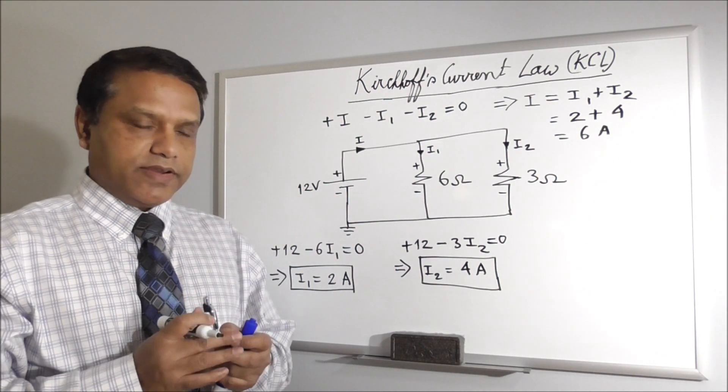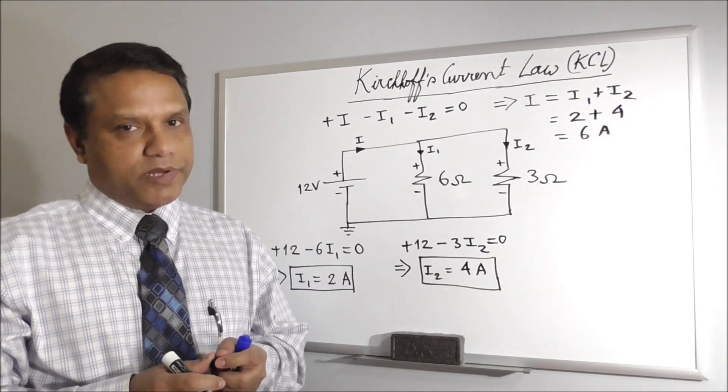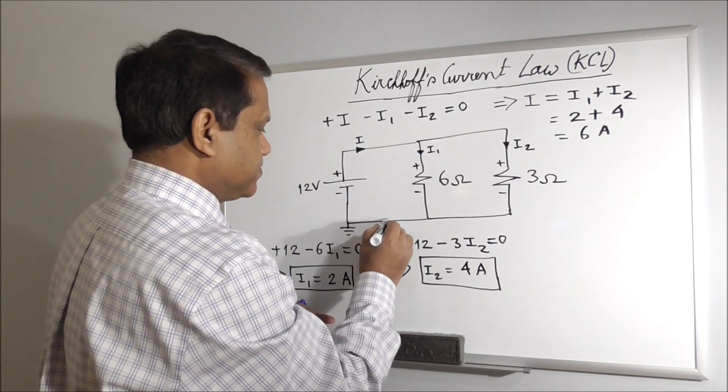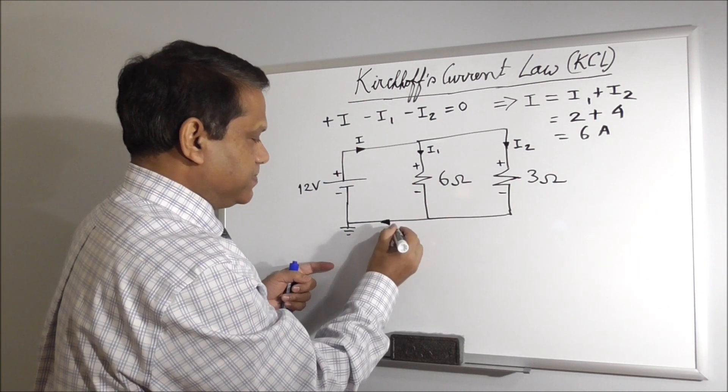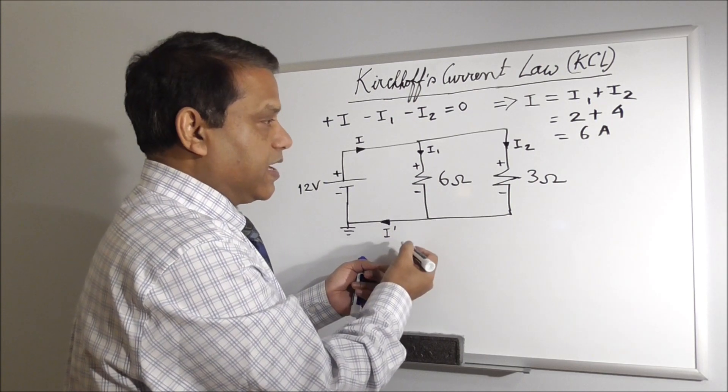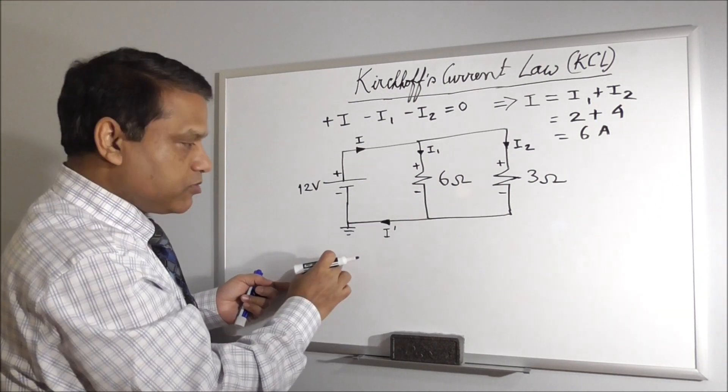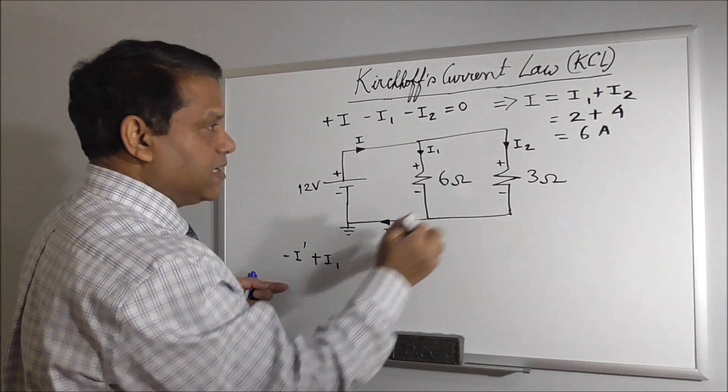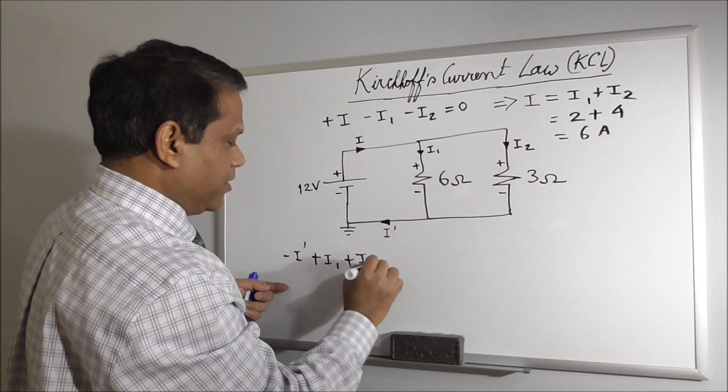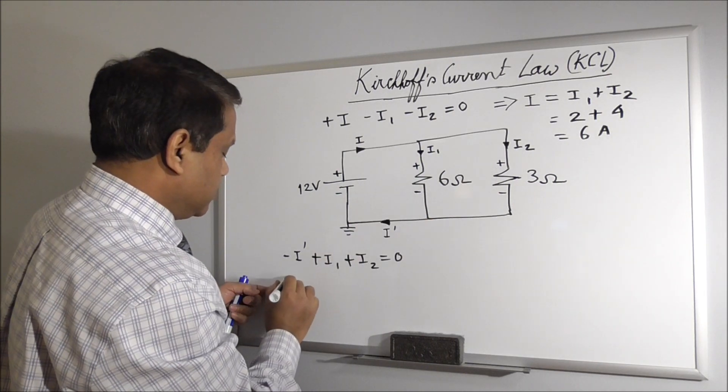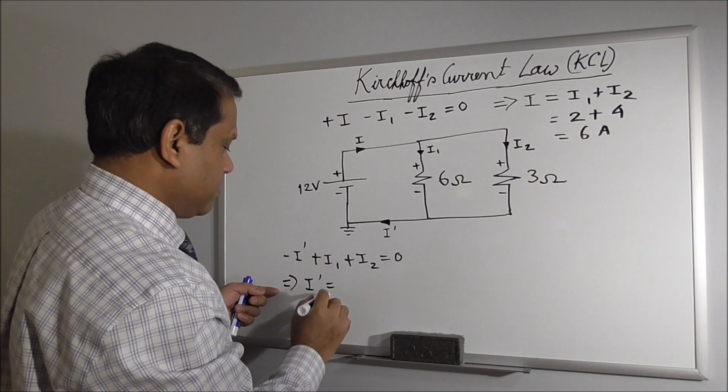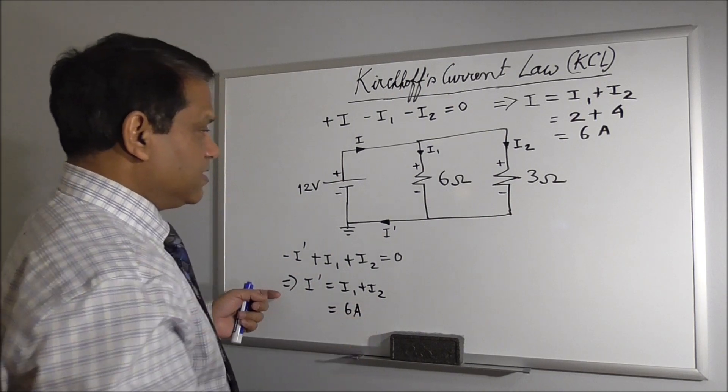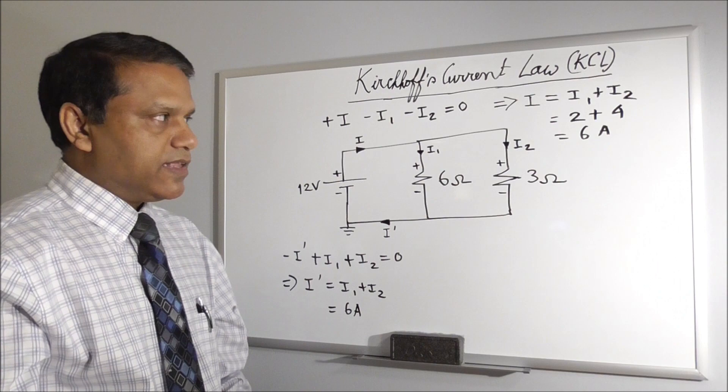Now one thing I have to mention here. Even though KCL is usually applied at a node, it doesn't have to be a node. It can be a system. Suppose in this case, you want to find this current. Let's assume this is I prime. And you can apply KCL here. And what will be the equation? This is going out. So this is minus I prime. This is coming in plus I1. This is coming in plus I2 equal to 0. Because the three branches connected to this node. That will give you I prime is equal to I1 plus I2 equal to 6 Ampere. So this is one way to find I prime using these two branch currents. That would be another way.